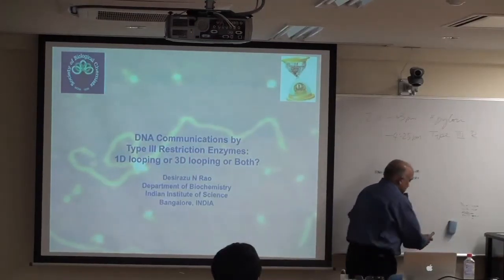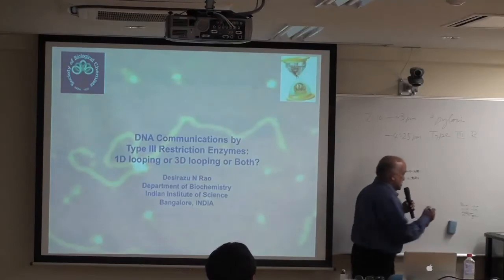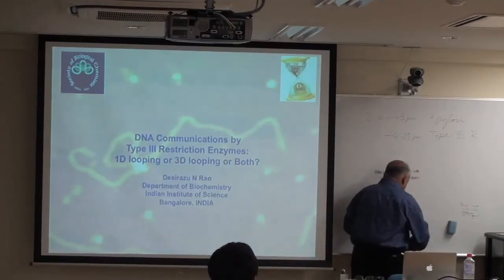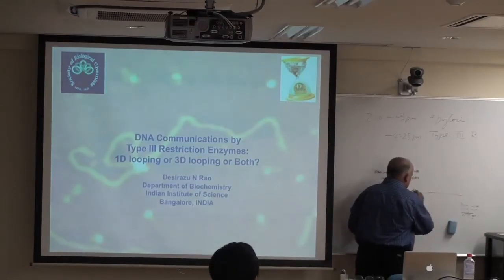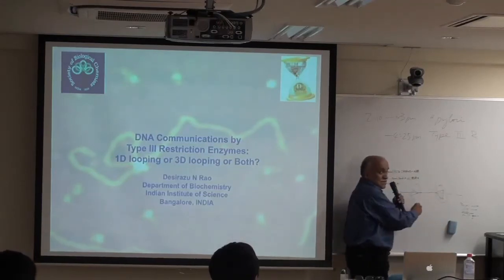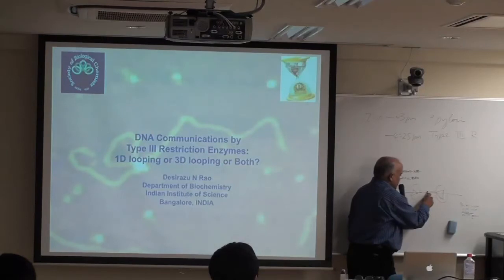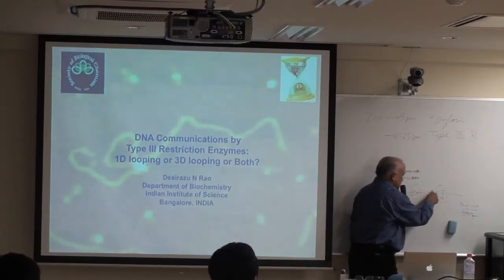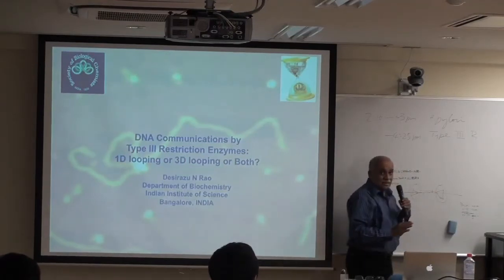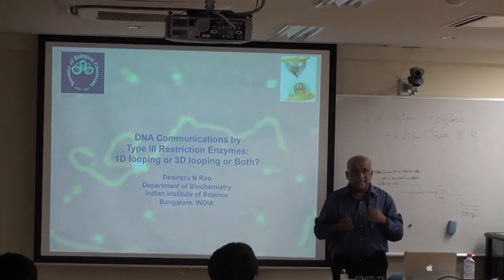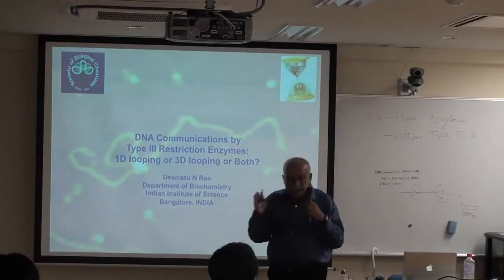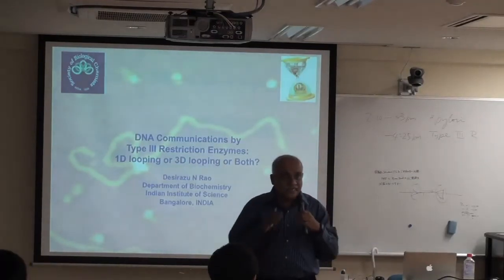The hypothesis is as follows: one enzyme molecule binds at one site, another binds at the second site, and they move toward each other. When they collide, they cut either 25 base pairs on one side or 25 base pairs on the other side — but not both sides simultaneously. This stochastic event is still not fully understood.